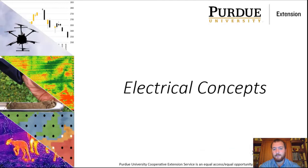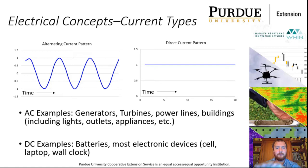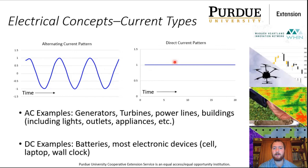On electrical concepts, there are two things I want to hit on. The first is current types. There are two types: alternating current, or AC, and direct current, or DC. AC follows a sine wave pattern. In the United States, that frequency is about 60 Hertz. Direct current doesn't have a sine wave — it's just a straight line that flows in one direction over time.